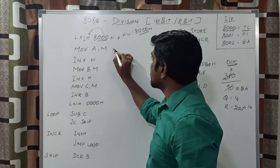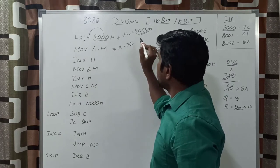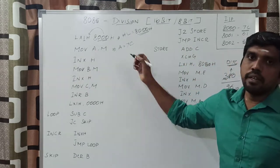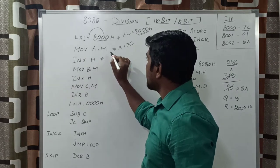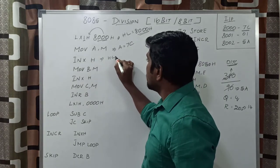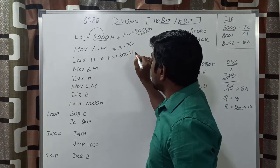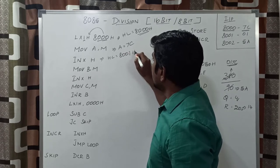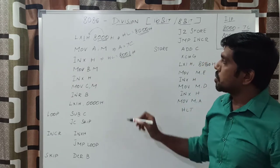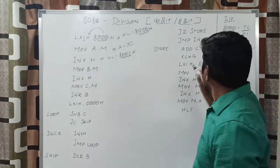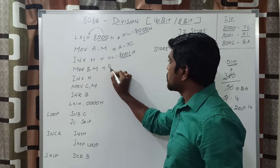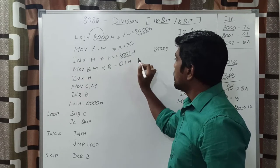After execution of that instruction, the third instruction is INX H — increment the HL pair. Now you get the higher 8-bit value. Before execution, the HL pair value is 8000h; after increment, the HL pair content becomes 8001h. The next instruction is MOV B, M. Whatever value is present at 8001h, that content is transferred to the B register — it is the higher-order 8-bit value, which is 01h.